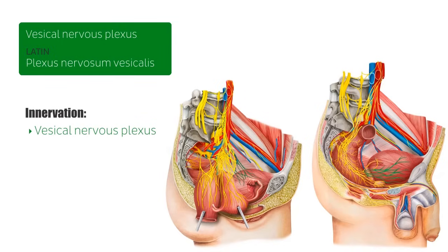In the case of the micturition reflex, the bladder can fill up to around 400 to 600 milliliters. When the bladder is full, it triggers stretch receptors in the bladder wall — this occurs around 300 to 400 milliliters, although at 150 milliliters it can cause an urge that is easily repressed. Once the bladder triggers the spinal nerves in the parasympathetic nervous system, the detrusor muscle contracts and the bladder expels urine through the urethra.